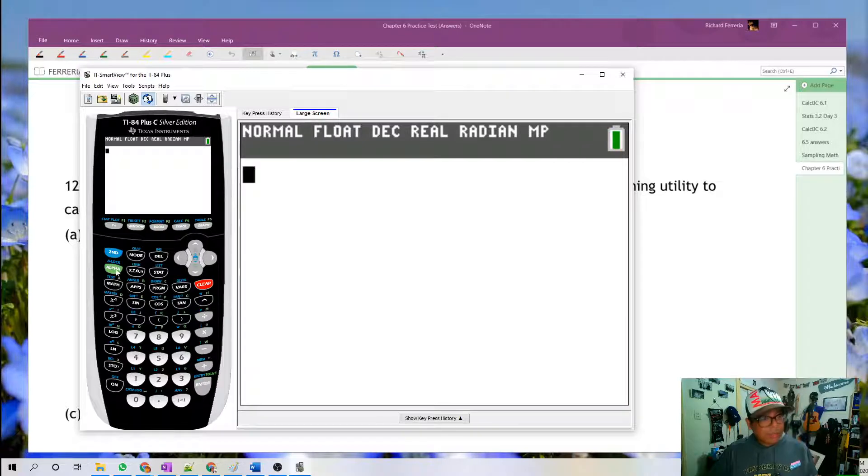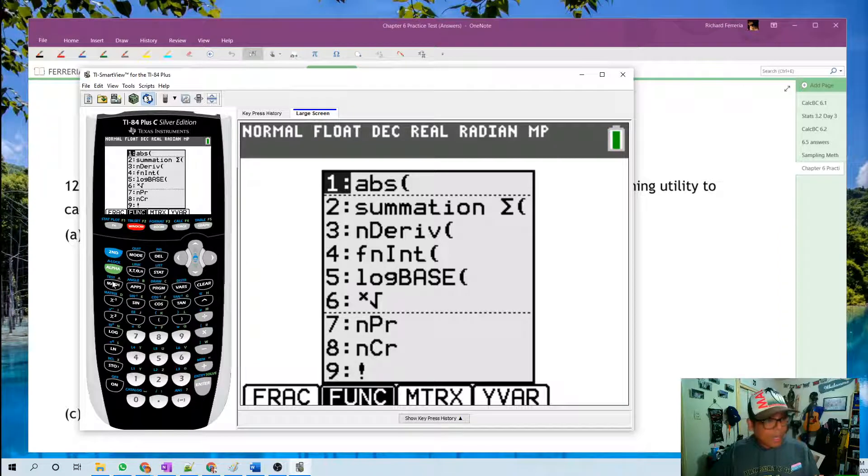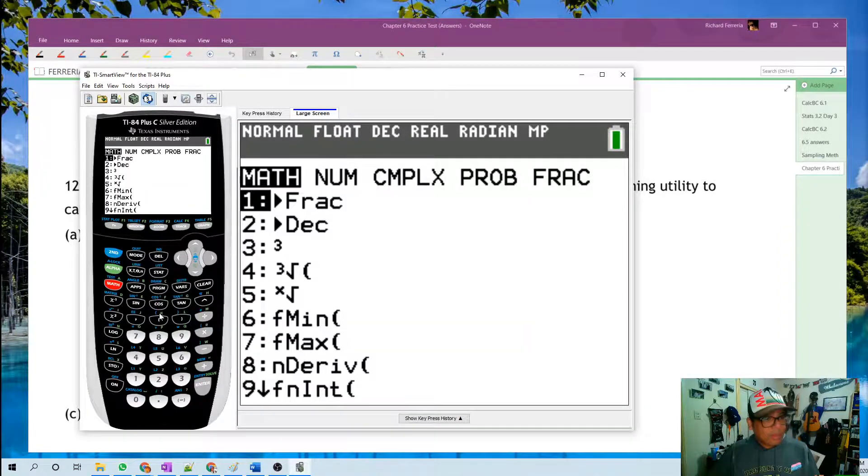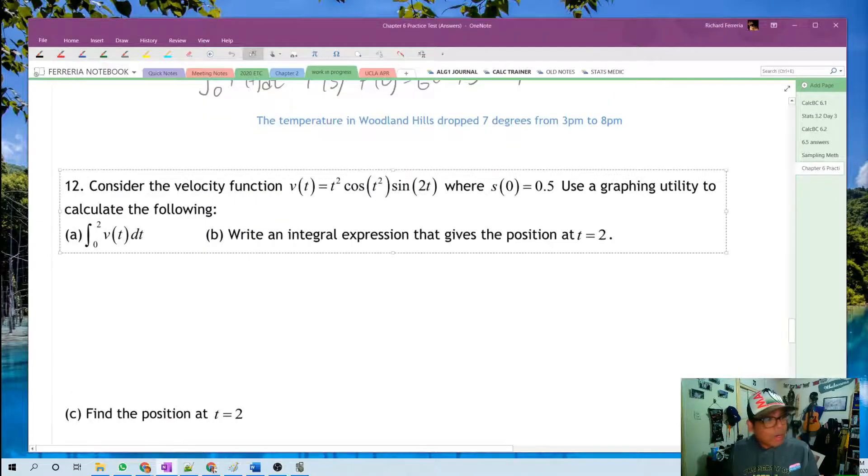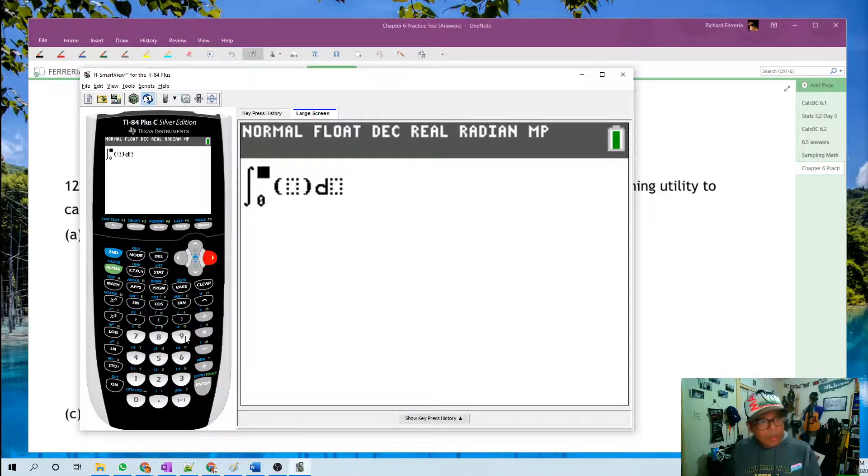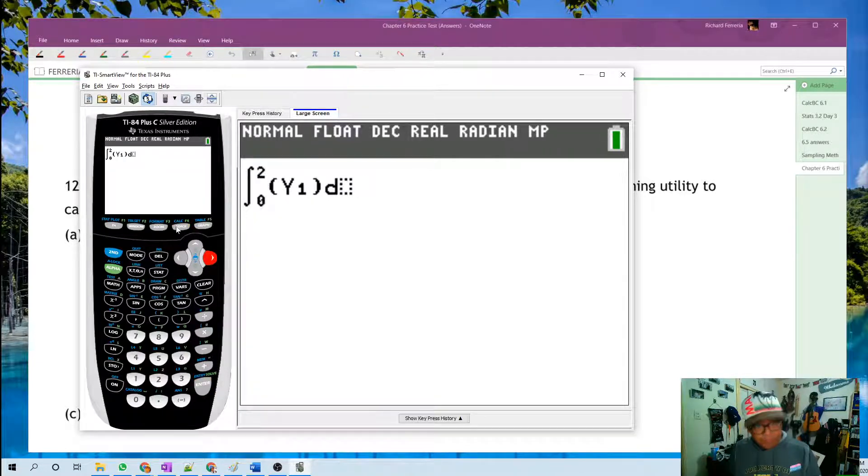Now the way to integrate, you have a couple of options to get to integral. The first one is alpha window, and then look here, number 4 is integrate. And the other way to get to that same function would be math, and then look over here, number 9, math 9. I don't know what's going to be faster for you. Maybe it's just me, but math 9 seems to be faster when I'm calculating. After all of that talk, I don't remember what we're doing anymore. Oh, integral from 0 to 2. So we're going to integrate from 0 to 2, y1, and we can do that with alpha trace y1 dx.